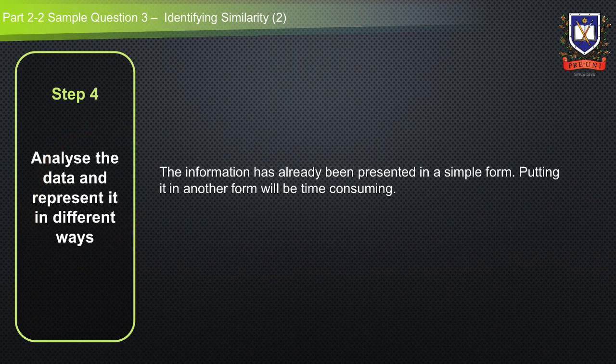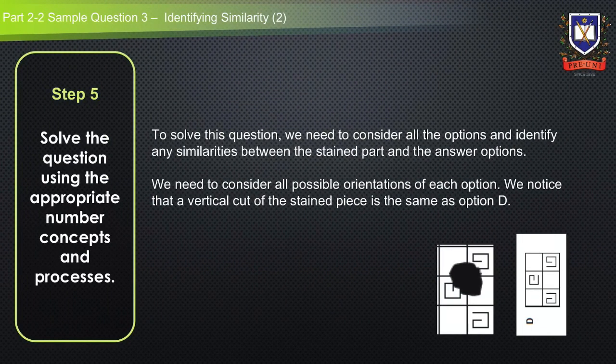Step four is to analyze the data and represent it in different ways. In this question, the information has been represented in a simple form — putting it in any other form may be time consuming, which is also typical for measurement questions. Step five is where we solve the question using appropriate number concepts and processes. To solve this, we need to consider all options and identify any similarities between the stained part and the answer options, considering all possible orientations of each option.